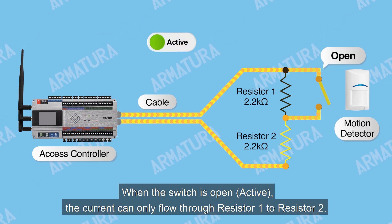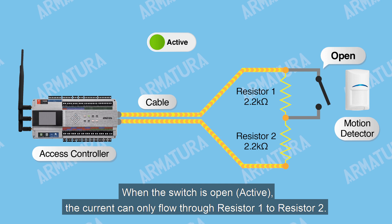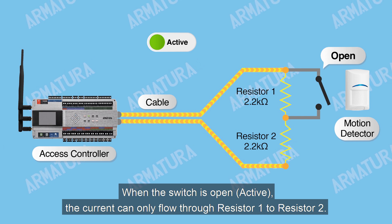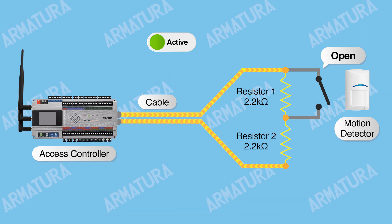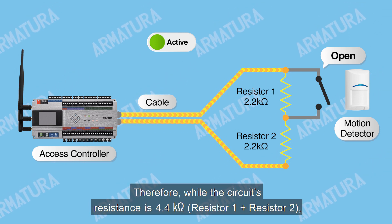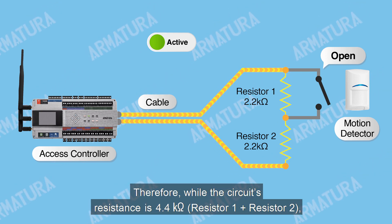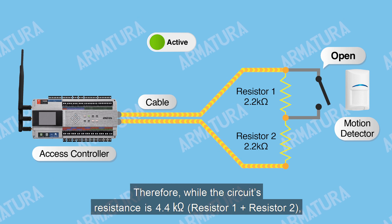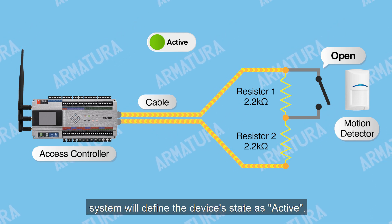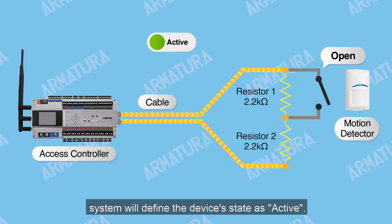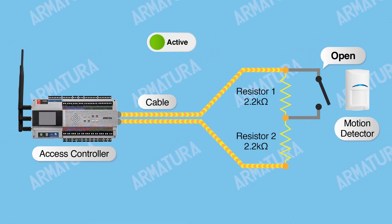When the switch is open, the current can only flow through resistor 1 to resistor 2. Therefore, while the circuit's resistance is 4.4 kOhms, the system will define the device's state as active.